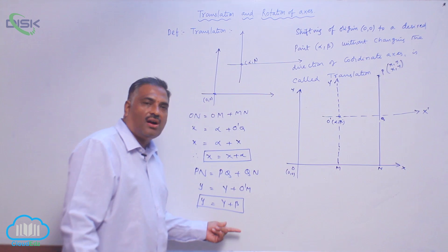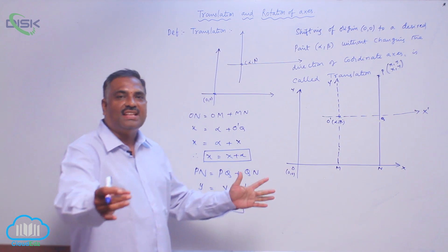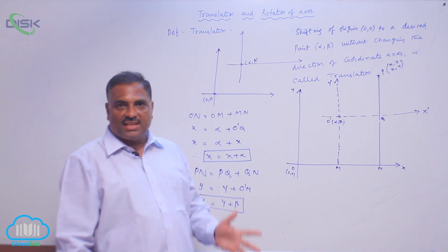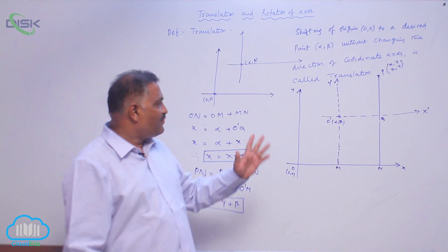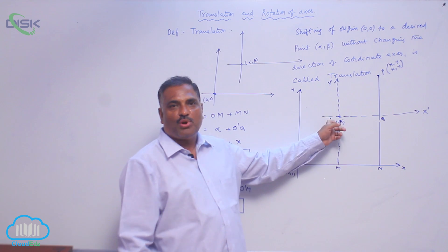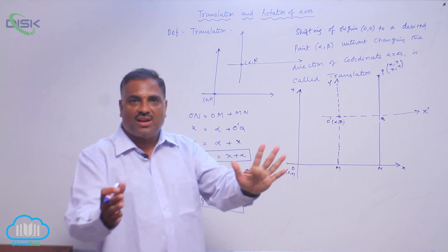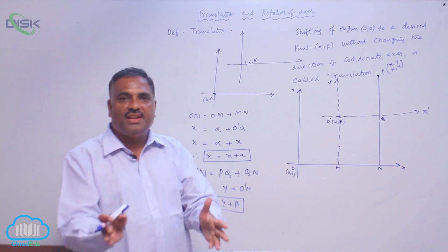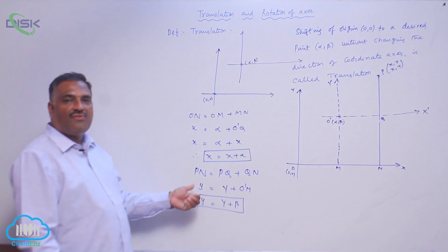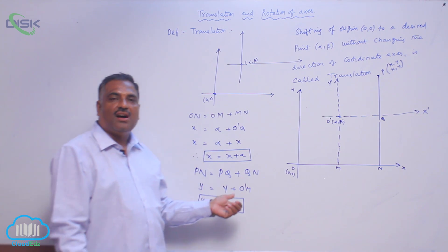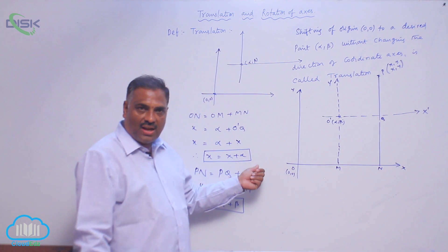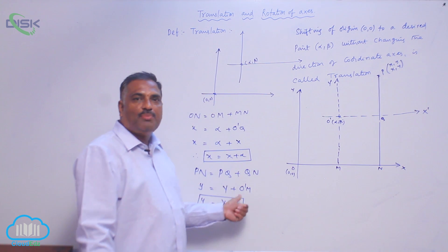These two are called equations of translation. Translation is the shifting of the origin from one point to another without changing the direction of the coordinate axis. The equations of translation are: small x = X + α, and small y = Y + β.